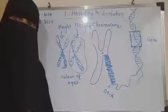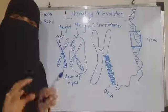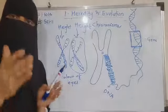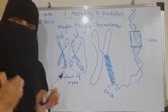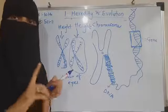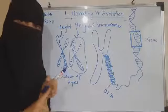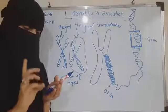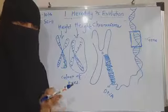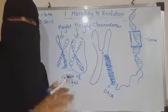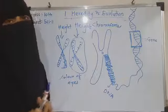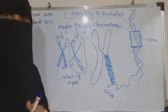This was all revision — the basic things you need for this chapter. So now you have understood about heredity, chromosomes, genes, alleles (that is, pair of genes), characters, and traits. All these things are clear. If it is clear, then we will proceed further.